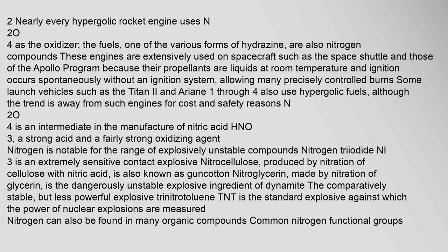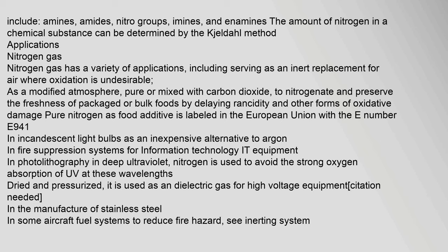Nitrogen is notable for the range of explosively unstable compounds it forms. Nitrogen triiodide NI3 is an extremely sensitive contact explosive. Nitrocellulose, produced by nitration of cellulose with nitric acid, is also known as guncotton. Nitroglycerin, made by nitration of glycerin, is the dangerously unstable explosive ingredient of dynamite. The comparatively stable but less powerful explosive trinitrotoluene (TNT) is the standard explosive against which the power of nuclear explosions are measured. Nitrogen can also be found in many organic compounds; common nitrogen functional groups include amines, amides, nitro groups, imines, and enamines.